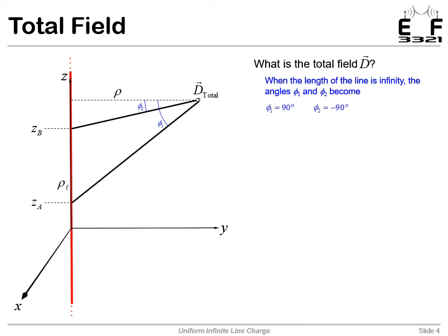So if our line is infinite, that means za will extend down, down, down, down, down, down super far. And what we can see is that this phi 1 becomes 90 degrees in the limit as our za goes to negative infinity. So phi 1 is 90 degrees for an infinite line.